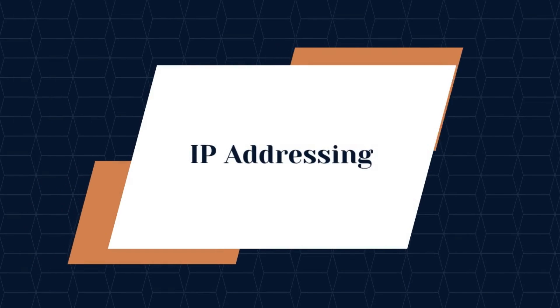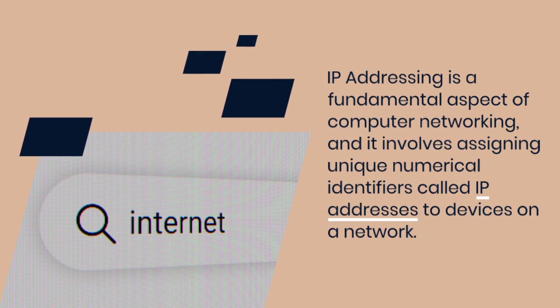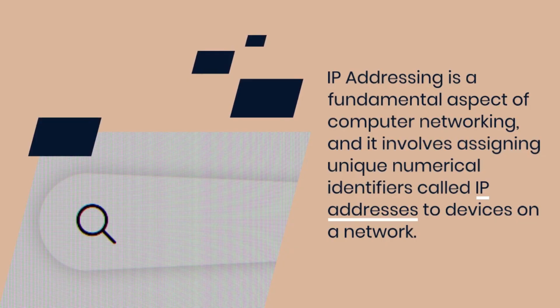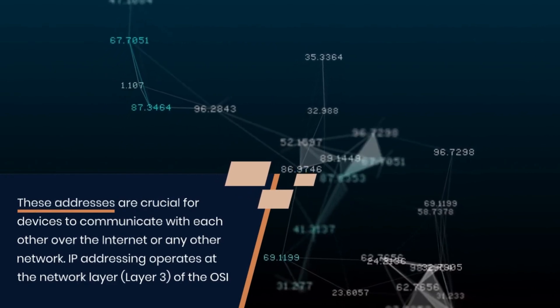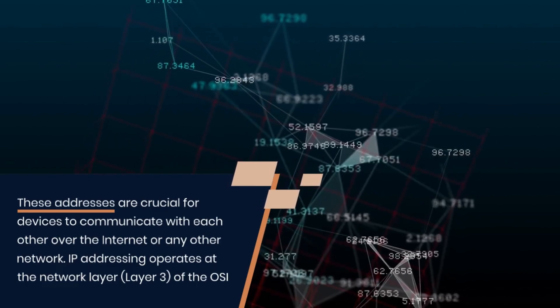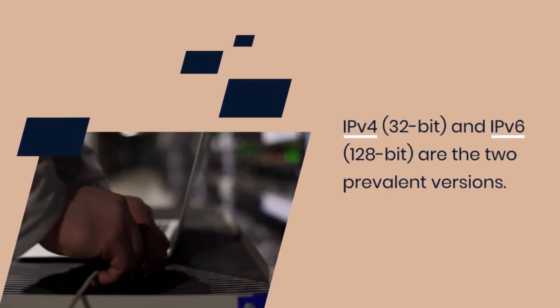IP Addressing is a fundamental aspect of computer networking. It involves assigning unique numerical identifiers, called IP addresses, to devices on a network. These addresses are crucial for devices to communicate with each other over the internet or any other network. IP Addressing operates at the network layer 3 of the OSI model.